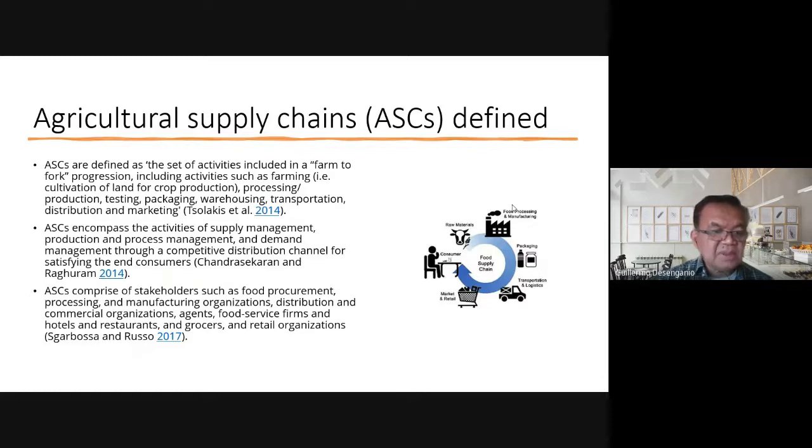Another definition by Sarboza and Russo: ASCs are comprised of stakeholders such as food procurement, processing and manufacturing organizations, distribution and commercial organizations, agents, food service firms, hotels and restaurants, and grocers and retail organizations. These are a whole bunch of institutions and firms involved in the supply chain.